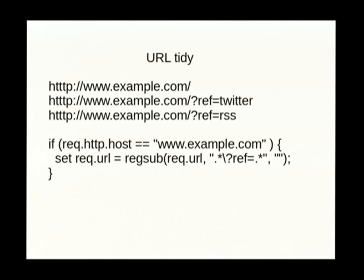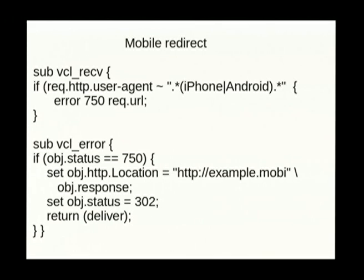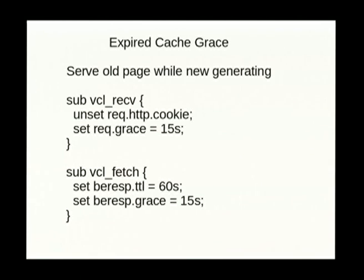Here are a few things you can do in your cache to tidy things up. You can strip URLs - if you have funny little URL variations you can strip them so you're always serving the canonical version. There's a tiny bit of Varnish config that does this. You can also do mobile redirects - it uses a custom error message internally to forward through to another section, then generates a 302 and redirects to the mobile version of your site. There's also an interesting trick where when an object expires in your cache, instead of expiring immediately you keep serving that expired object for 15 seconds whilst generating a new one - this avoids suddenly sending 100 queries to your backend.